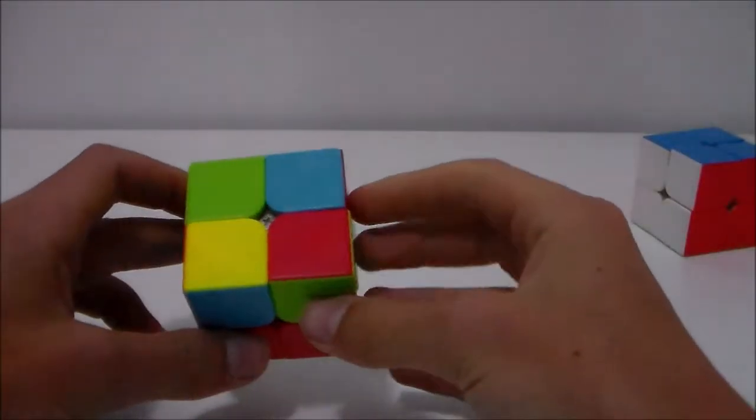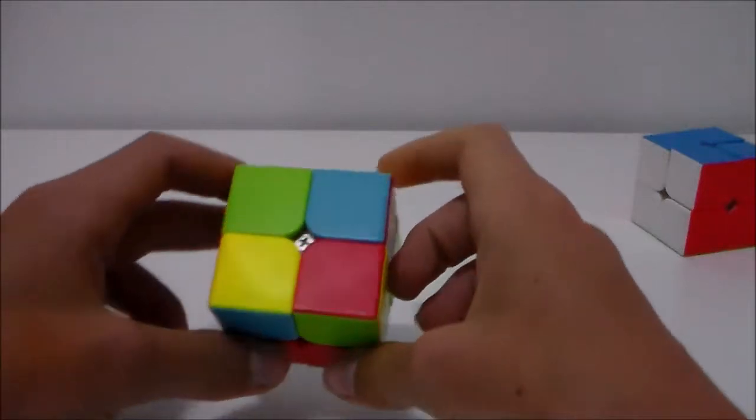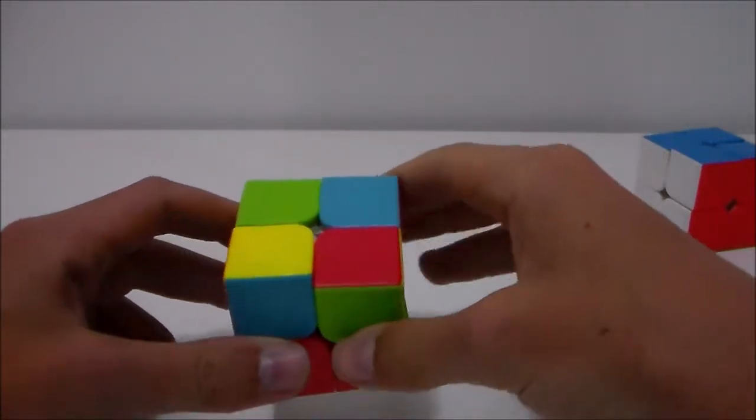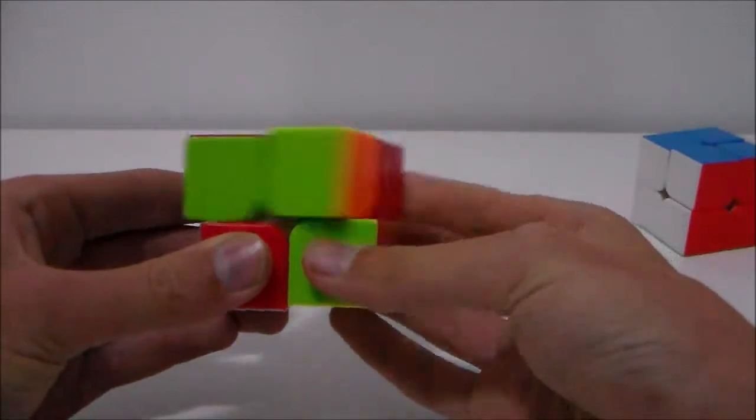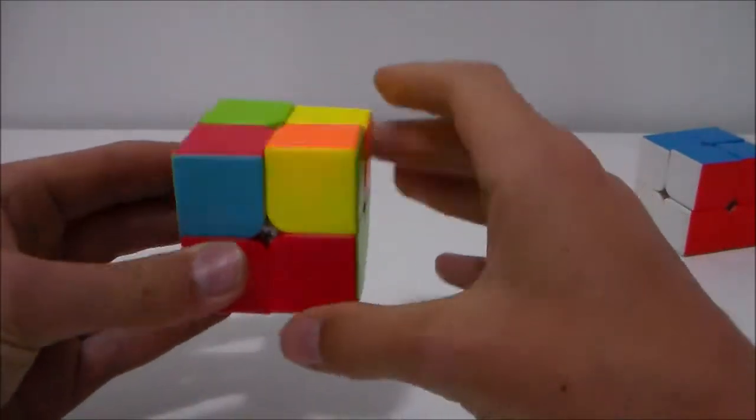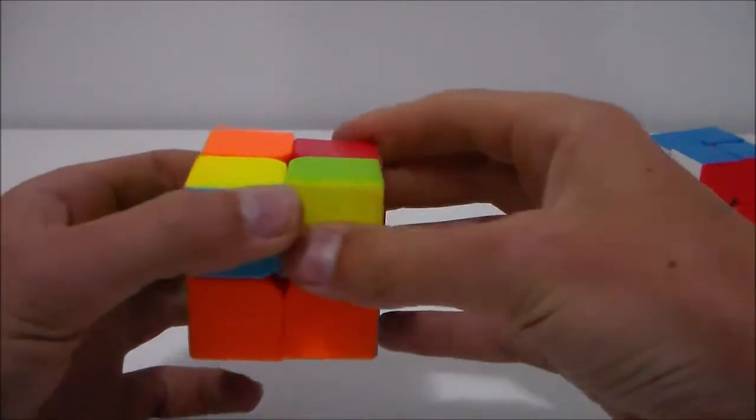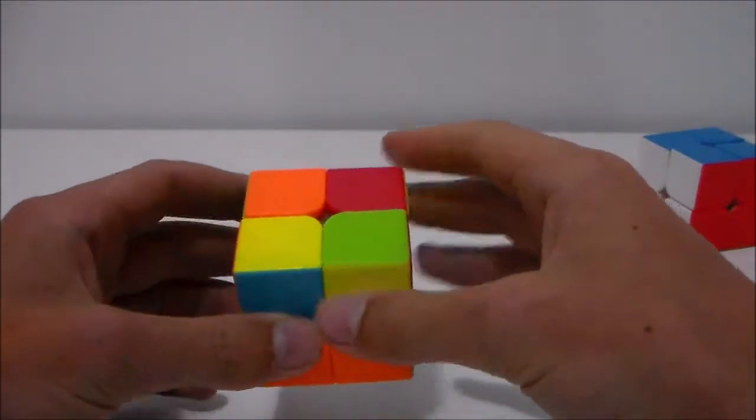Let's start off with if there's only one piece on the top. You will want to perform an algorithm called Sune. So this is R U R prime, U R U2 R prime, and you might have to do this once or twice to get the yellow layer oriented.